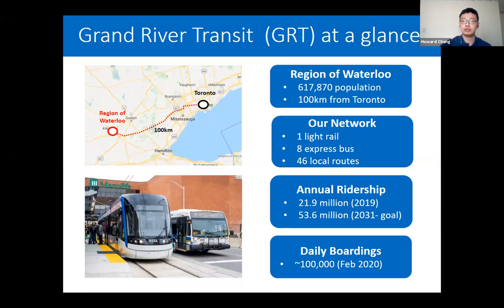A little bit about ourselves: Grand River Transit is the primary transit service provider in the Region of Waterloo. We are located 100 kilometers west of the city of Toronto. We're also one of the fastest growing regions in Canada. We operate a mix of local routes and high-frequency express routes. In 2019 we added a new light rail line, and our annual ridership is 21.9 million passengers, with a goal to reach 53.6 million by 2031.